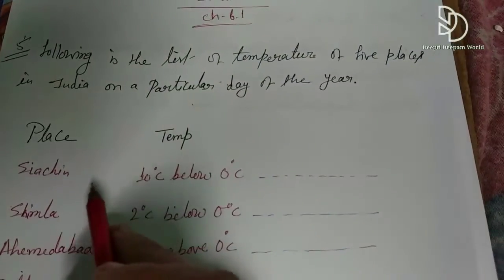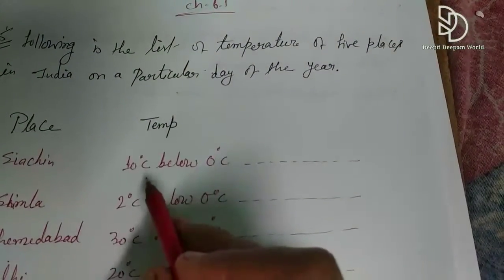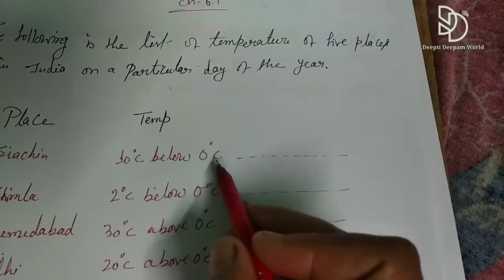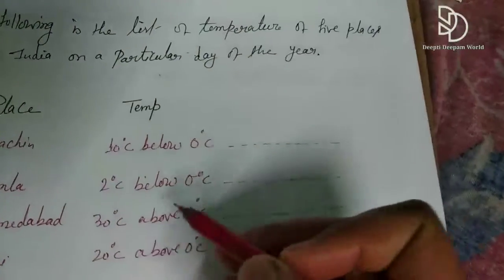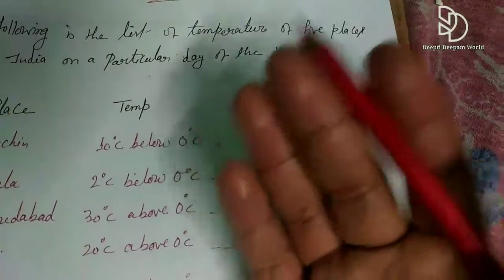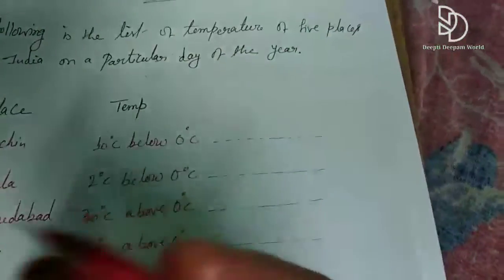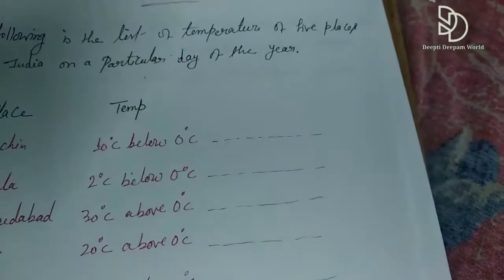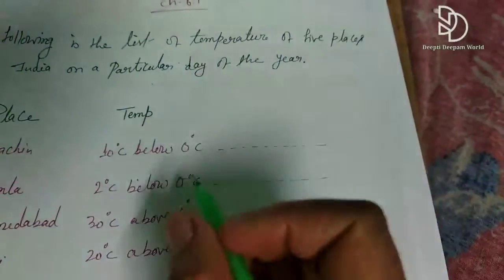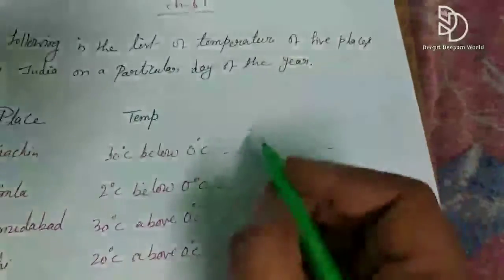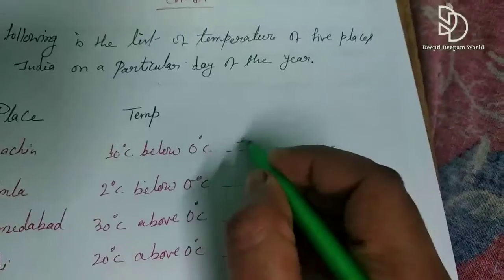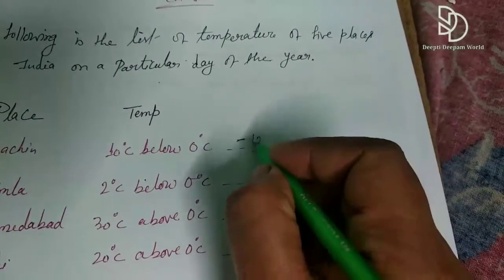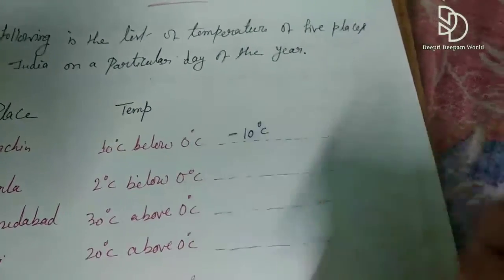First of all, the temperature is 10 degrees Celsius below 0 degrees Celsius. We have seen below and above in the first videos. Below means negative. So we have to show this as minus 10 degrees Celsius.